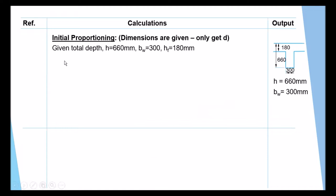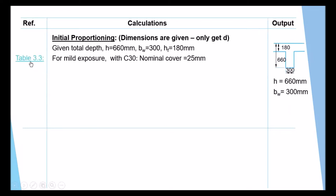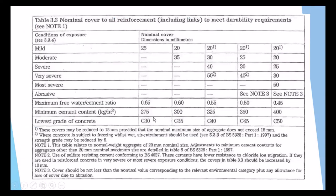For the initial proportioning, dimensions are already given, so we only need to find the effective depth D. B-web is 300, H is 660, HF is 150. To get D, we need the cover. From Table 3.3, mild exposure with C30 gives a nominal cover of 25 millimeter. Then checking for fire from clause 3.4, one hour fire resistance for beams gives 20 millimeter. We take the larger value, so cover is 25 millimeter.